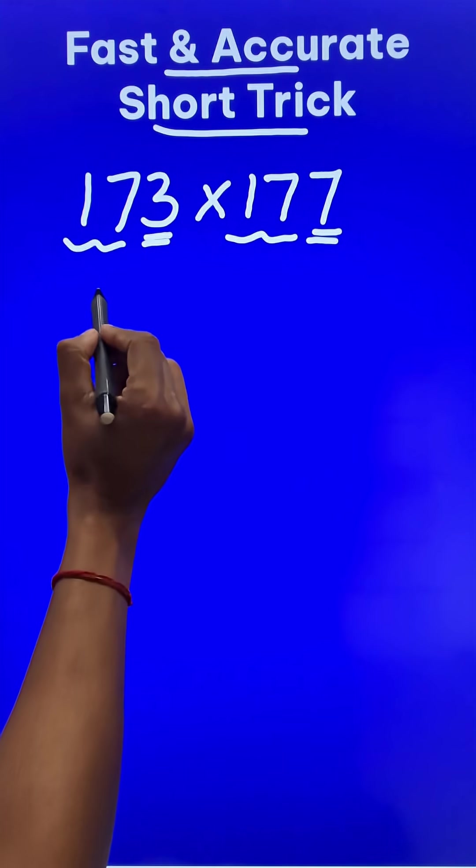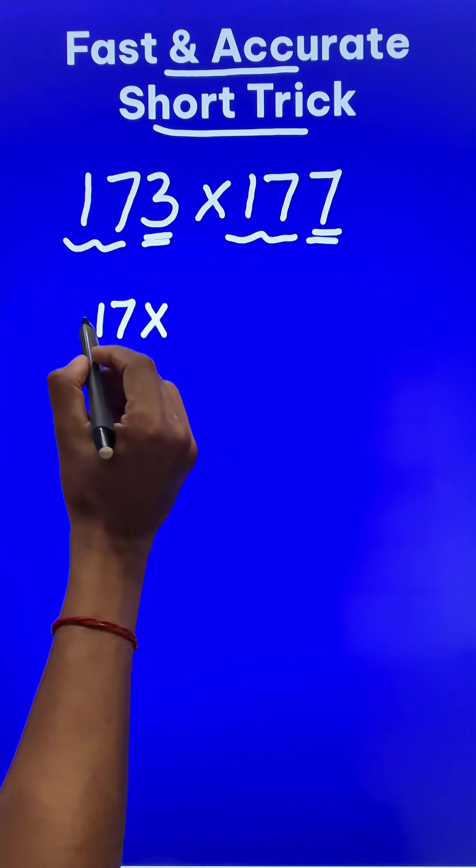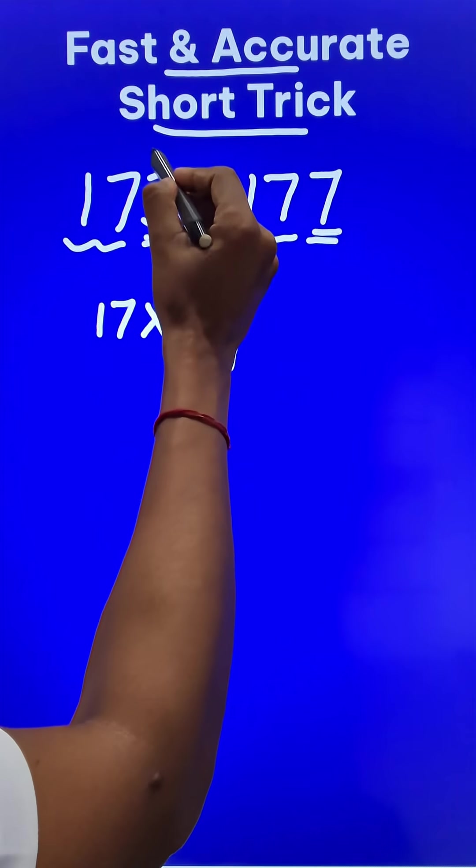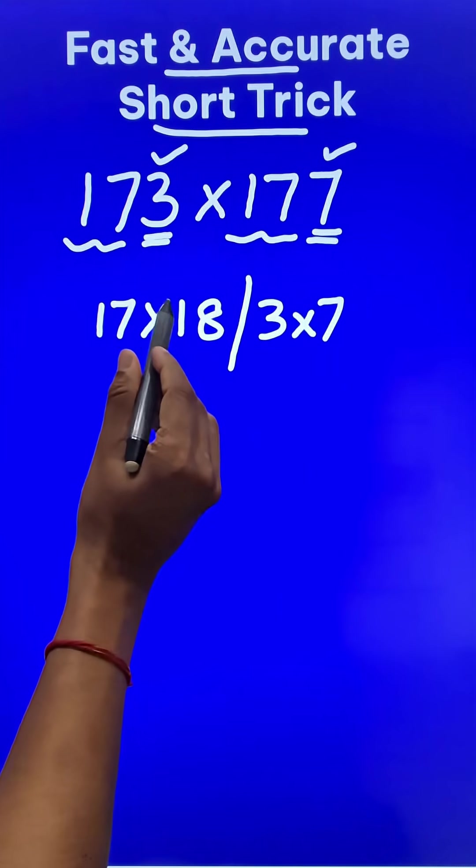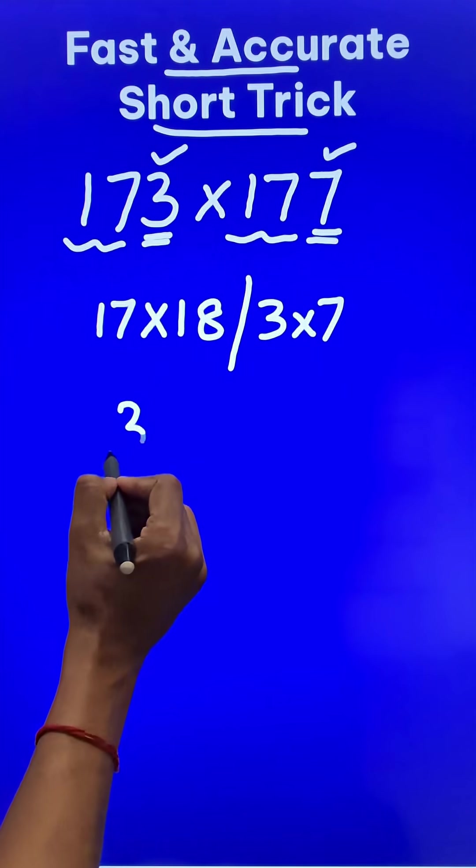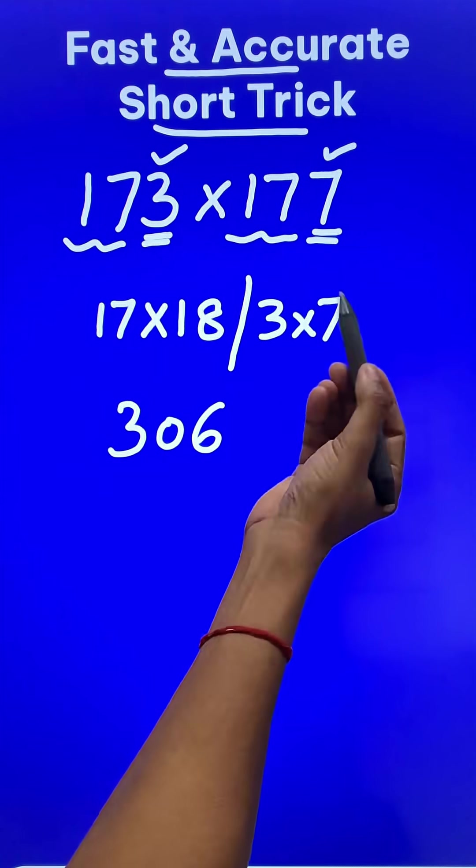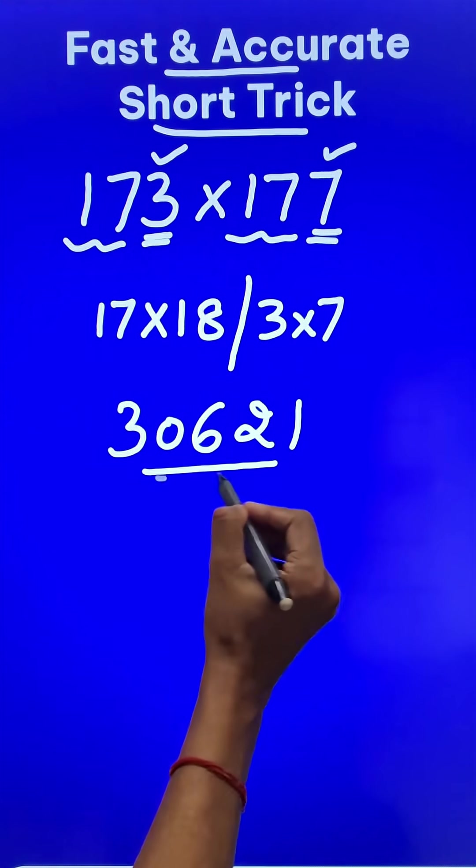So the first part is 17. You just have to do 17 times its consecutive number 18, and then the last two digits 3 and 7 are to be multiplied, which gives you 21. So 17 times 18 is 306, and suffix 21 to this result to get your answer: 30621.